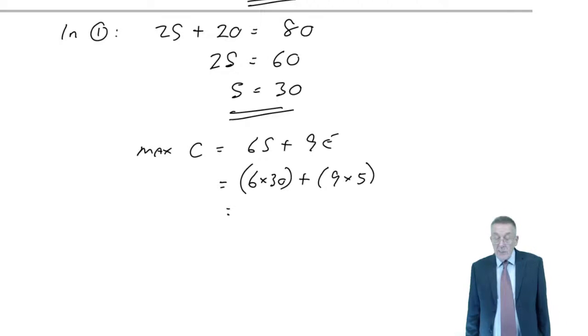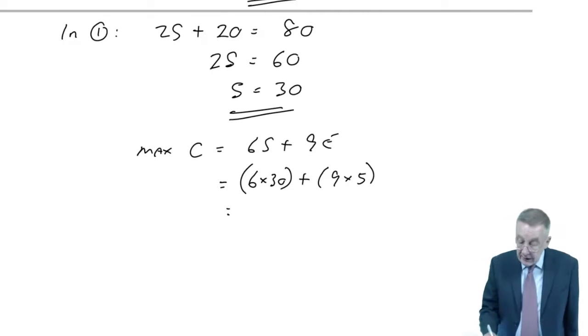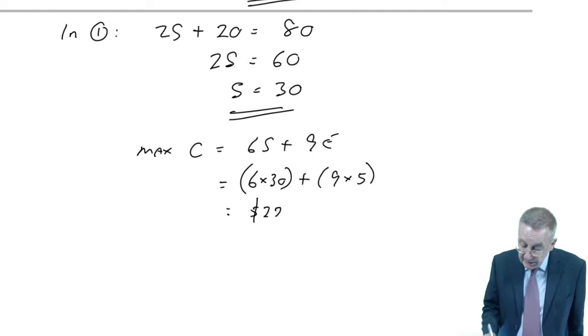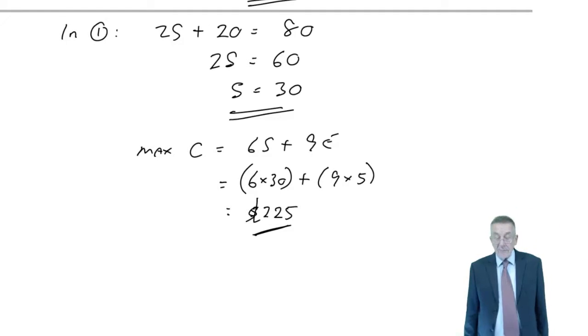And so the total contribution will be 180 plus 45. It could be 225. And there we are.